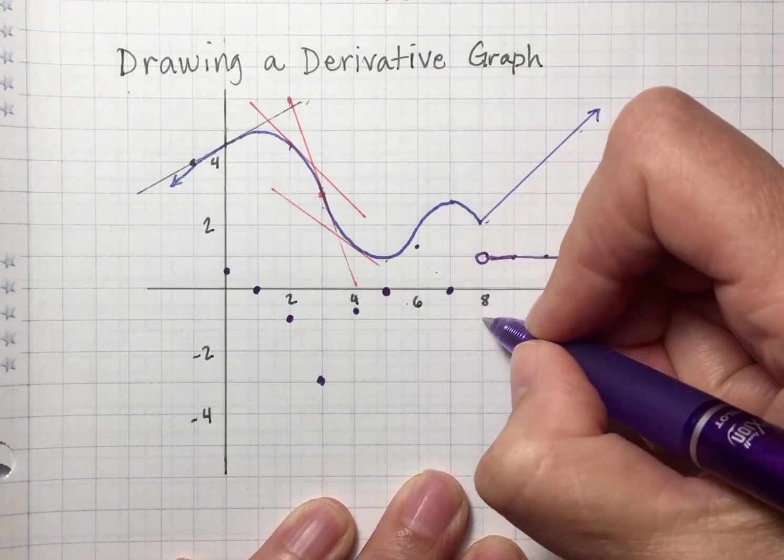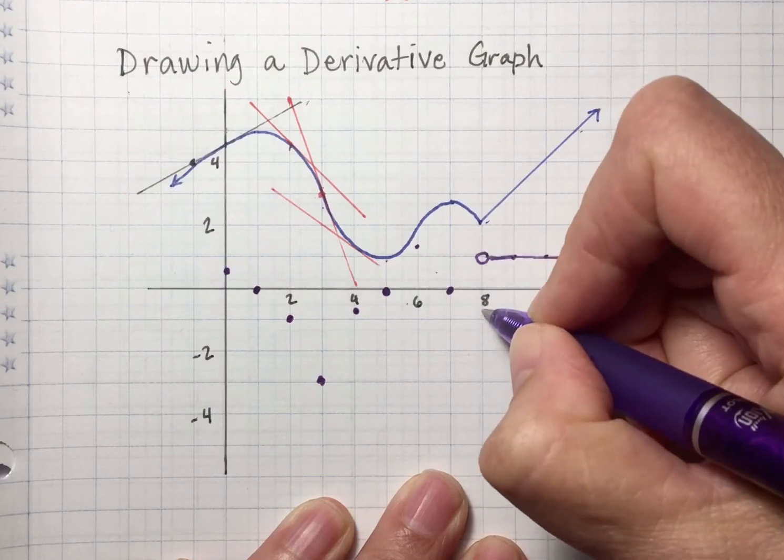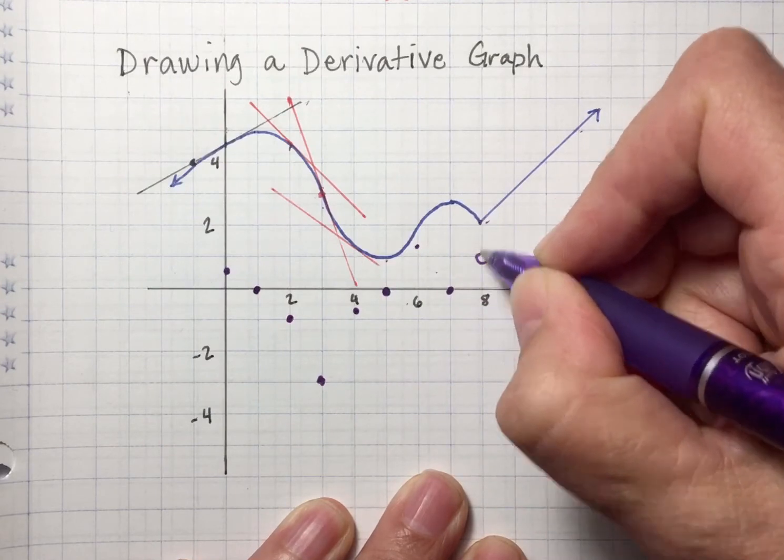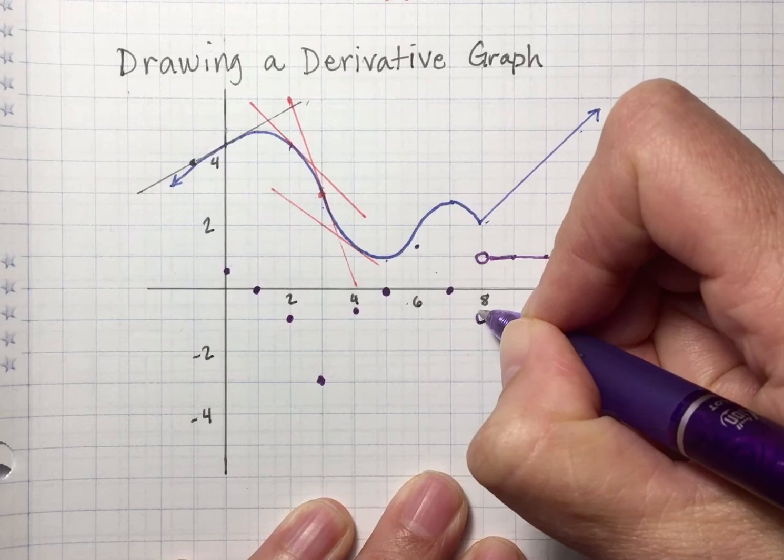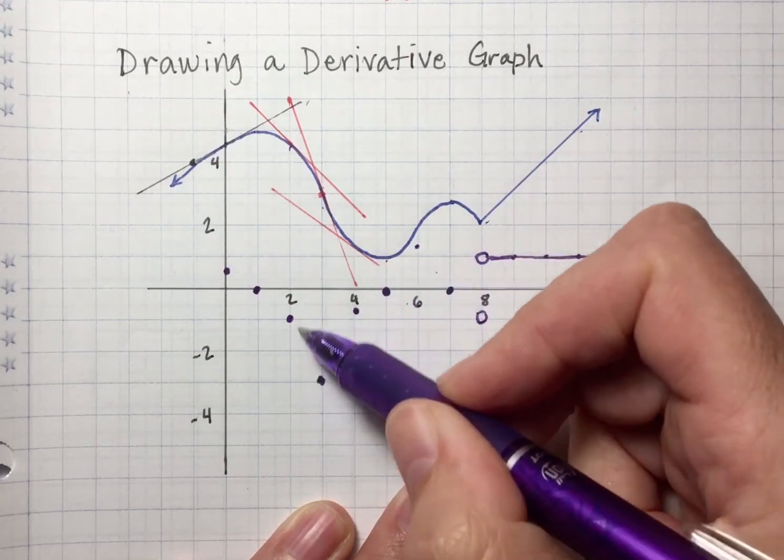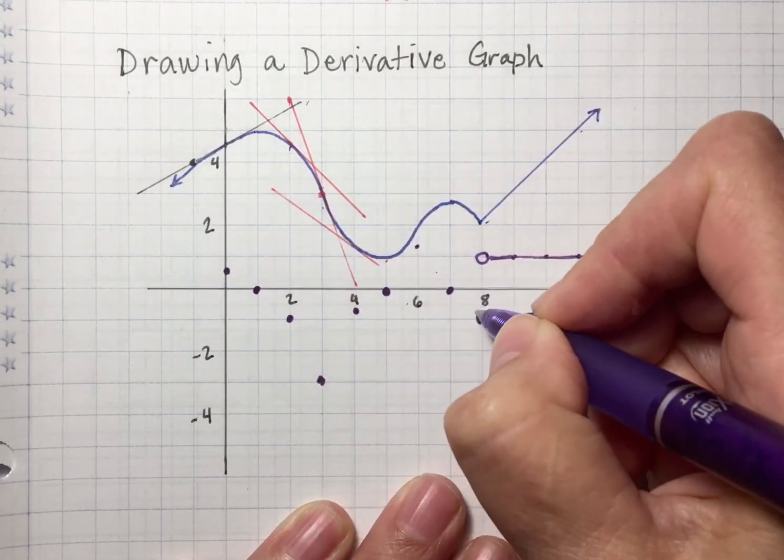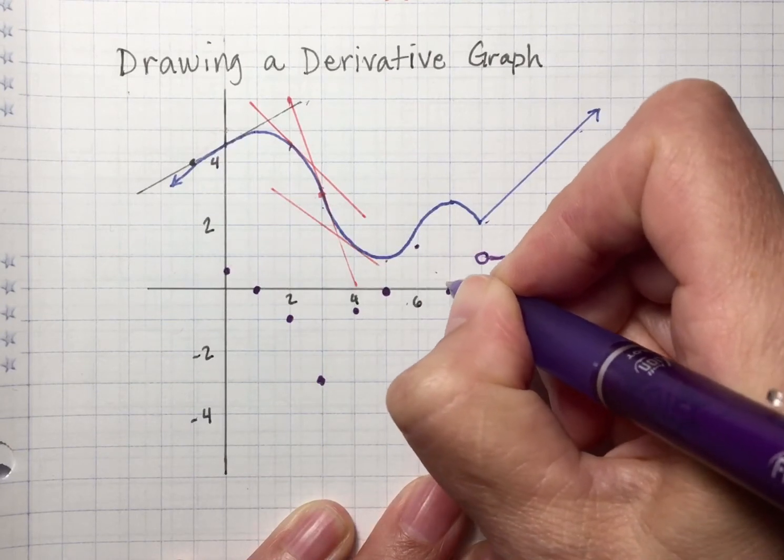Then as I head toward 8, my slope looks like it's about a negative one-ish. But at 8 itself, because I can't draw a tangent line on a corner, I'm going to have an open circle here. So now that I have all these points plotted going across, I can just connect them in a smooth curve.